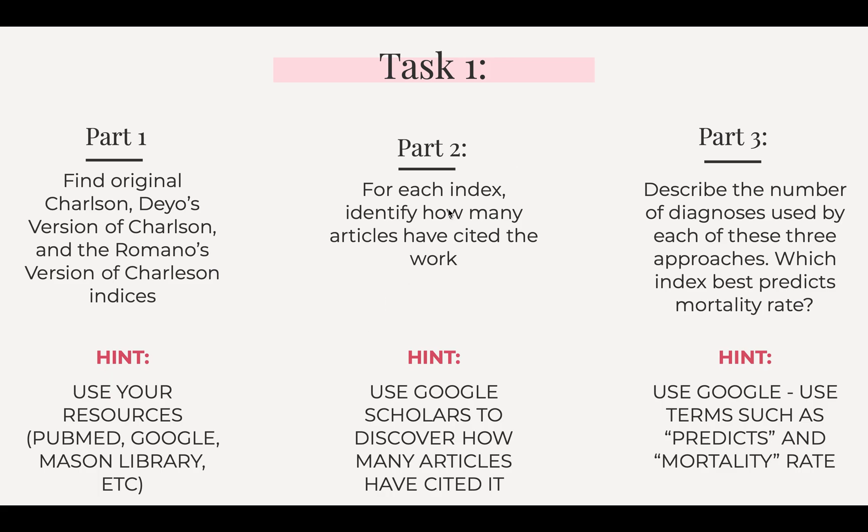The second part is to identify, for each index, how many articles have cited that work. My hint is to use Google Scholar because it has a way to identify how many articles have cited the Charlson's index. It's really important to know that because this is a significant topic — to be credible, you need a lot of work citing it to confirm it is realistic and legitimate.